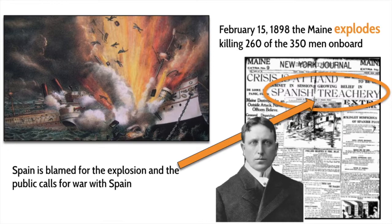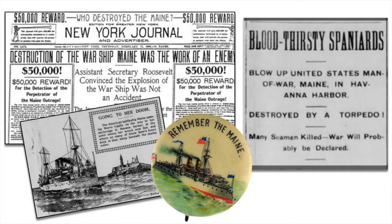Hearst's newspaper reports that there was Spanish treachery that led to the explosion of the USS Maine — that it must have hit an underwater mine or been hit by a torpedo from a mysterious Spanish submarine. Without any evidence, newspapers begin to blame the Spanish for the explosion. As emotionally wound up as people already were, this made sense to them. Despite the fact that there was no evidence to suggest that the Spanish had anything to do with the explosion, the newspapers and the media ran with that story.